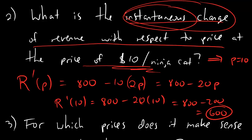So whatever that means, the rate of change of revenue with respect to price is $600 when the price that we charge is $10 per ninja cat. Now that might still seem like, okay, well I guess I got the number, but what does that mean? We're going to talk about what that means, check it out.